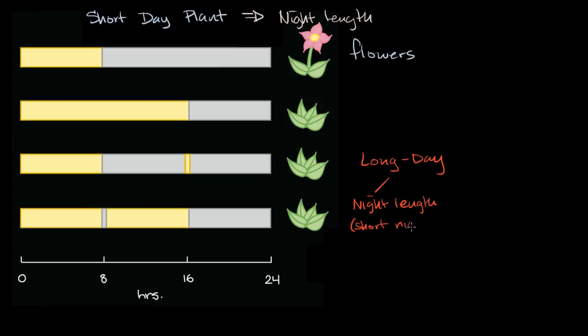And so a long day plant that's dependent on night length would be, you could call it a short night plant. Short night. And these are called dark dominant. Dark dominant.